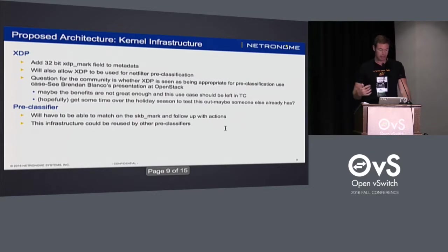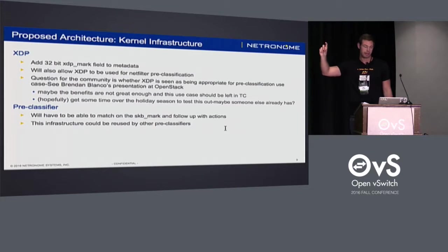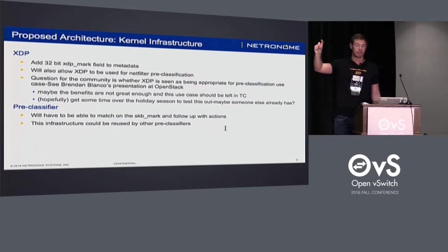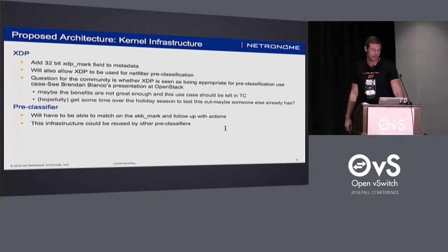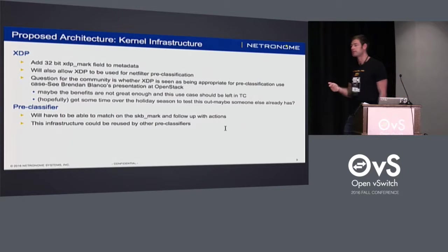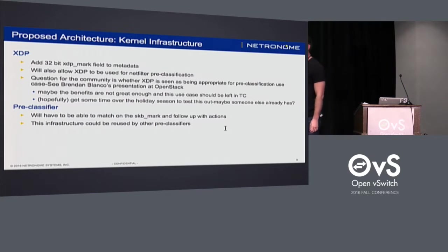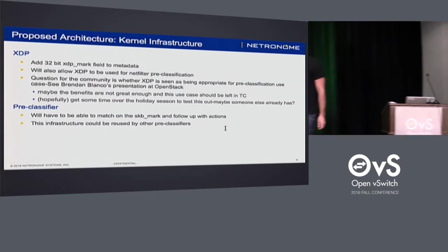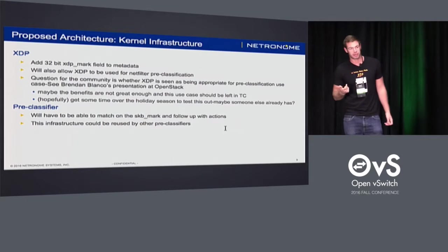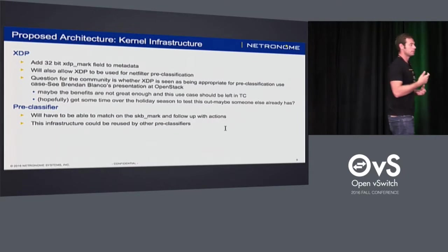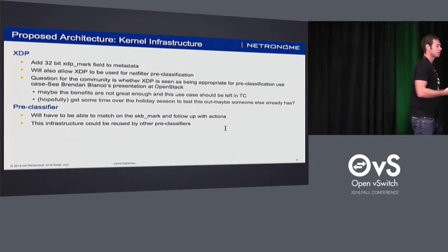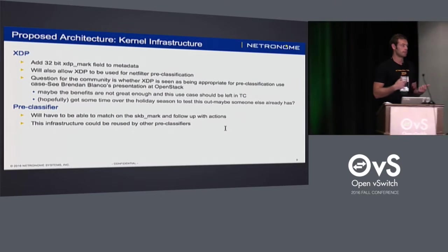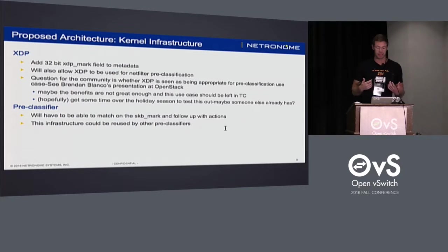That's pretty much the OVS program and the kernel infrastructure. As I said, an XDP mark field would be needed for metadata, and this can also be used for things like netfilter — so this would not be an OVS-specific feature. We could use this for netfilter pre-classification, building pre-classifiers into other bits of kernel data path structures.